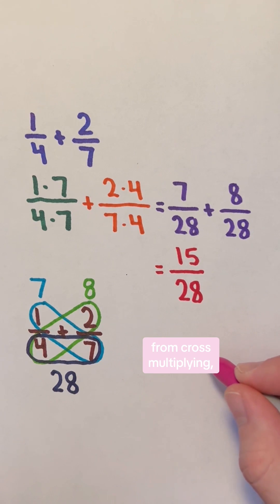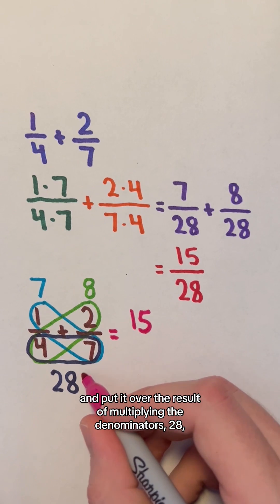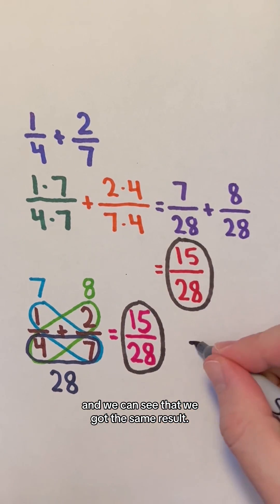Lastly, we add the products from cross multiplying, 7 plus 8, which is 15, and put it over the result of multiplying the denominators, 28, and we can see that we got the same result.